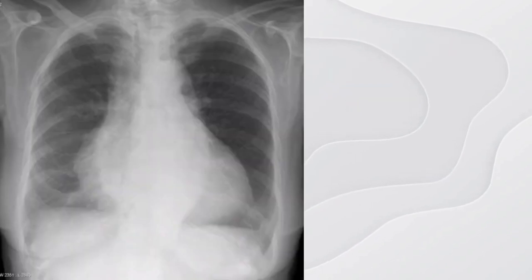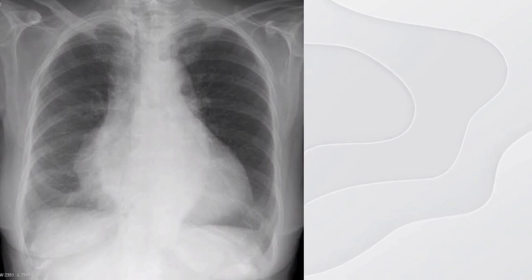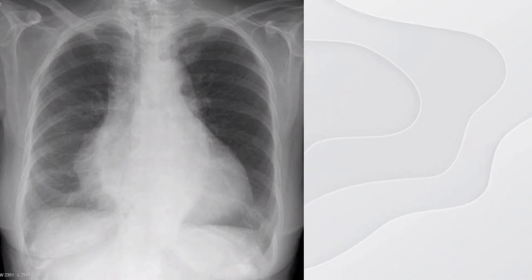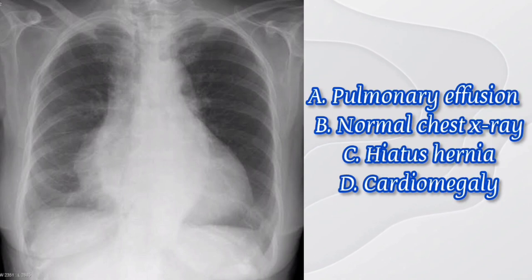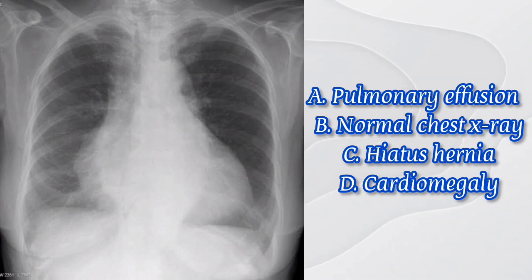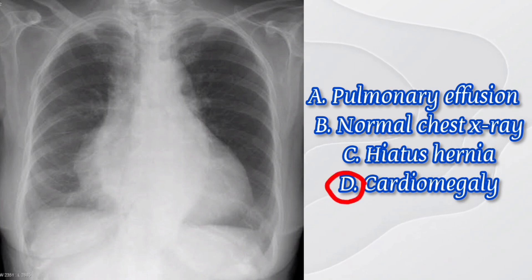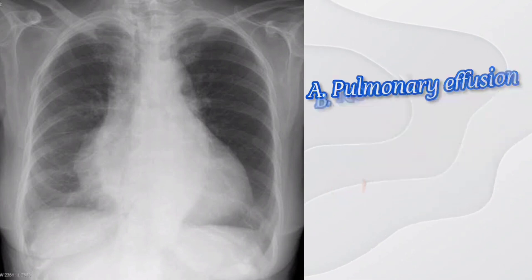Number ten, the last question: review the chest X-ray radiograph and choose the most accurate diagnostics. The options are: A) pulmonary effusion, B) normal chest X-ray, C) hiatus hernia, and D) cardiomegaly. The answer here is D) cardiomegaly. So how many of these did you get correctly? I would like to see your score in the comment section!